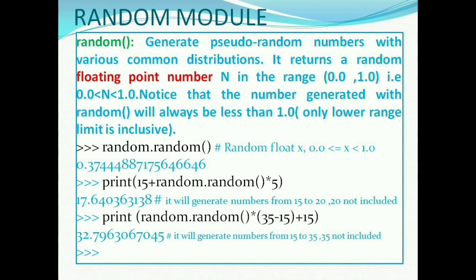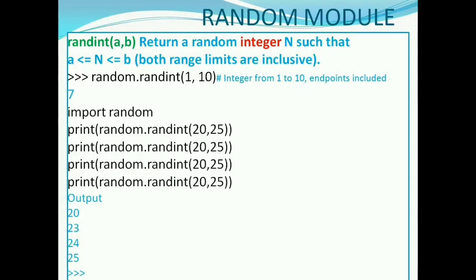The lower limit will be included but not the upper limit, that is 1.0. The randint function will generate a random integer, but the upper limit and lower limit will be inclusive. randint 1 to 10 will generate random integers from 1 to 10; both the endpoints are included.